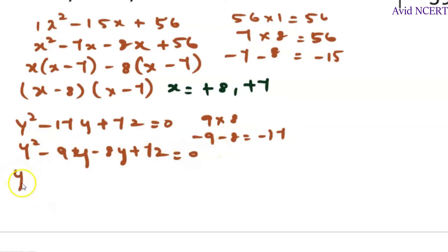Taking the common term out, which is y into y minus 9 minus 8 into y minus 9 equals 0. Which is y minus 8 and y minus 9. So which is y equals plus 8 comma plus 9.